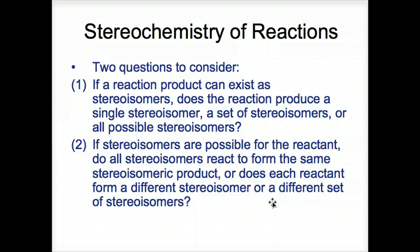Here are some important questions about reactions, the stereochemistry of reactions. Two questions to consider. If a reaction product can exist as stereoisomers, does the reaction produce a single stereoisomer, a set of stereoisomers, or all possible stereoisomers? If stereoisomers are possible for the reactant, do all stereoisomers react to form the same stereoisomeric product, or does each reactant form a different stereoisomer, or a different set of stereoisomers? Let's look at some of these terms as we try to answer these questions in the next portion, and I'm going to end right now. Thank you.